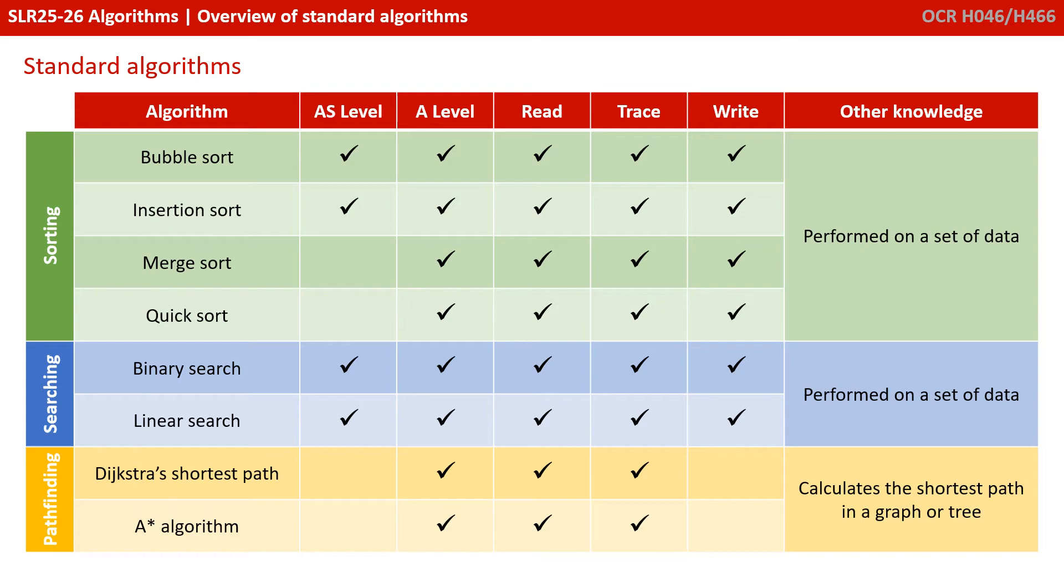So, here's a handy summary table for you. You can see the two sorting and searching algorithms you're required to know at AS, and the two additional sorting and also pathfinding algorithms for A-level. Notice here the columns read, trace and write.